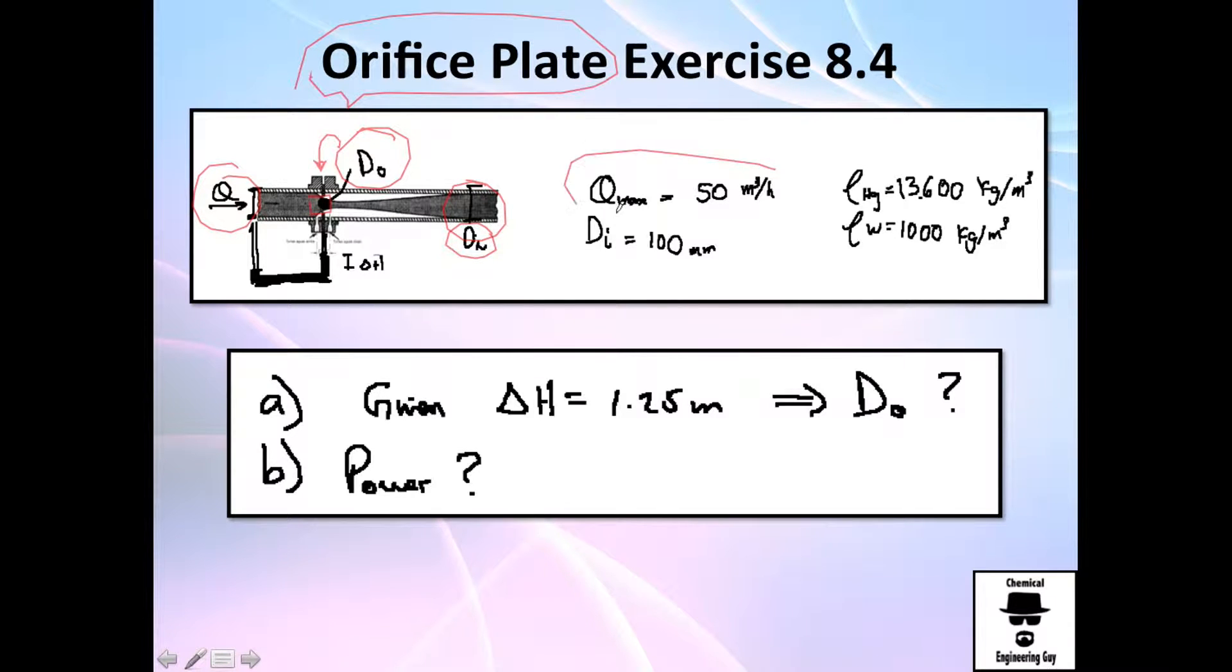We have a volumetric flow rate. They tell you what is the maximum power if we want to operate 50 cubic meters per hour. Recall that the density of mercury is 13,600 kg/m³ because this is mercury, normally is mercury, and that of water is 1000 kg/m³. The normal diameter is 100 millimeters and they tell you to calculate or find out what's the throat's diameter.